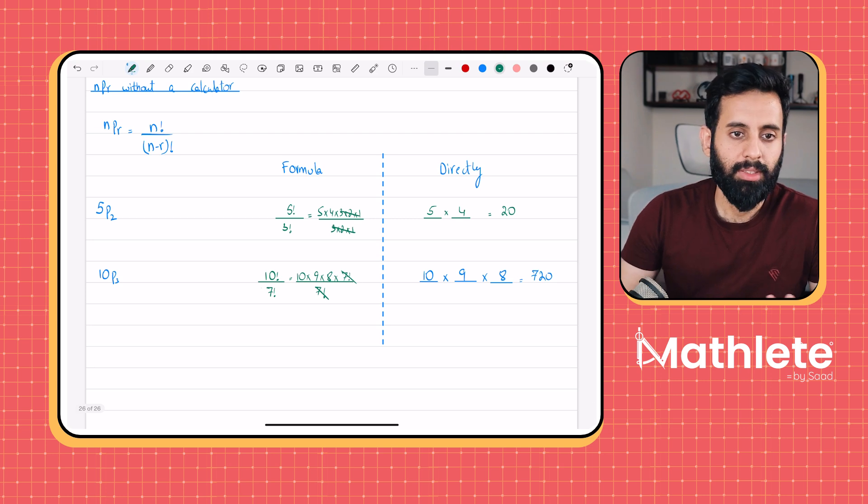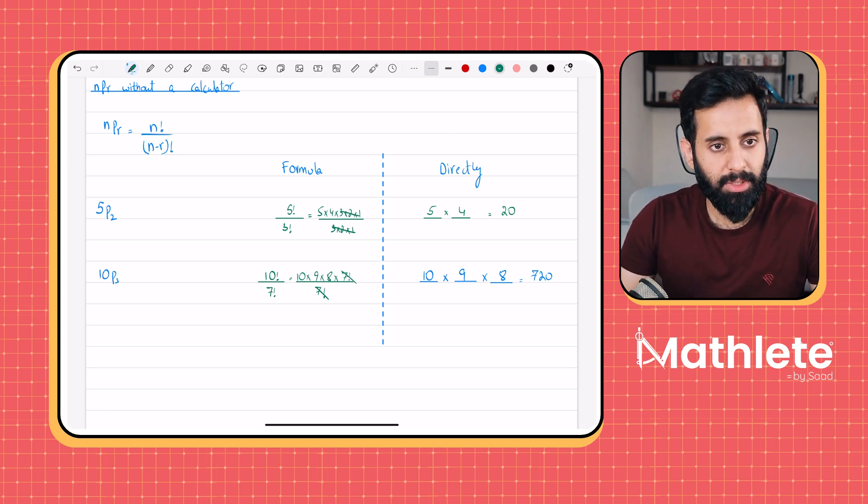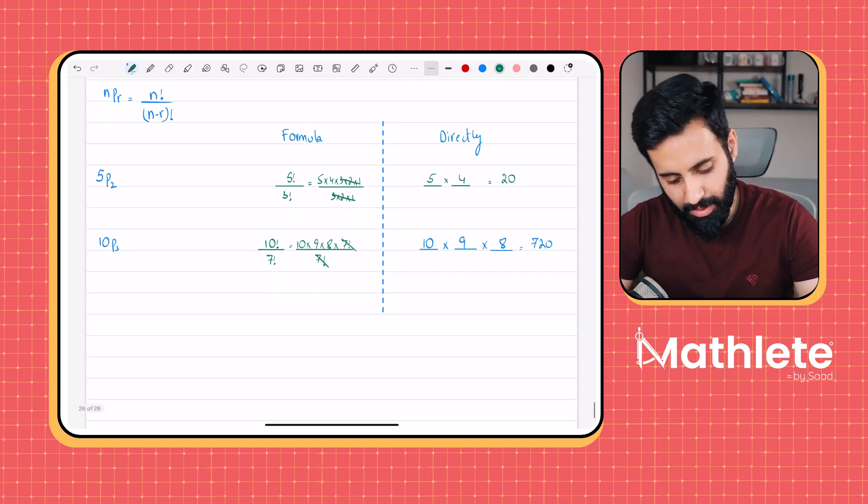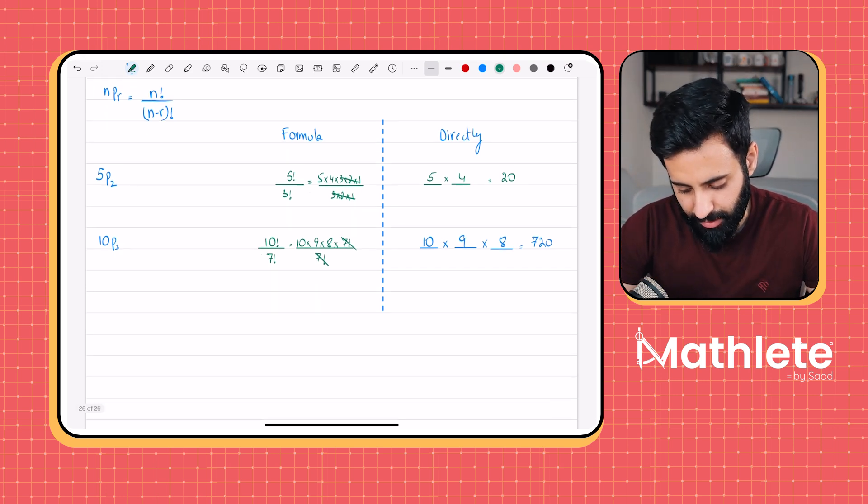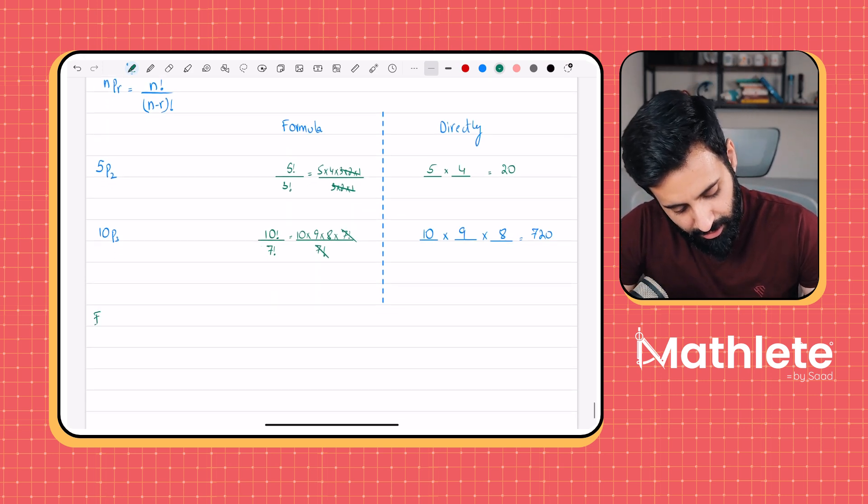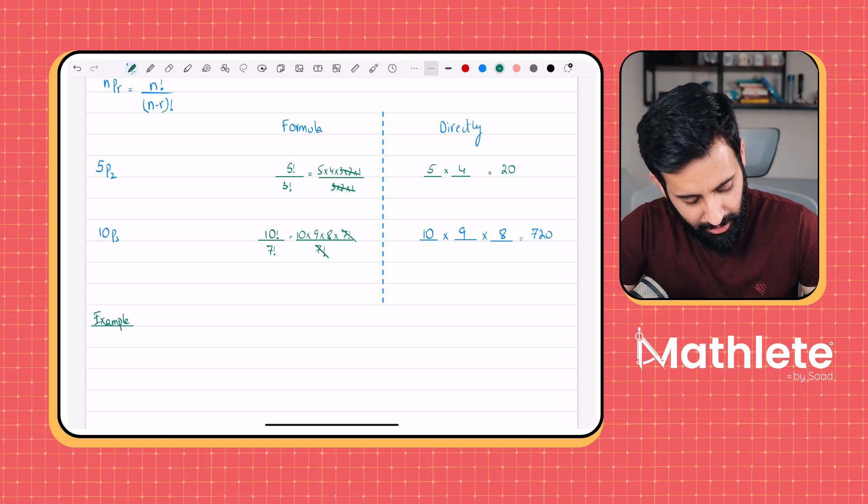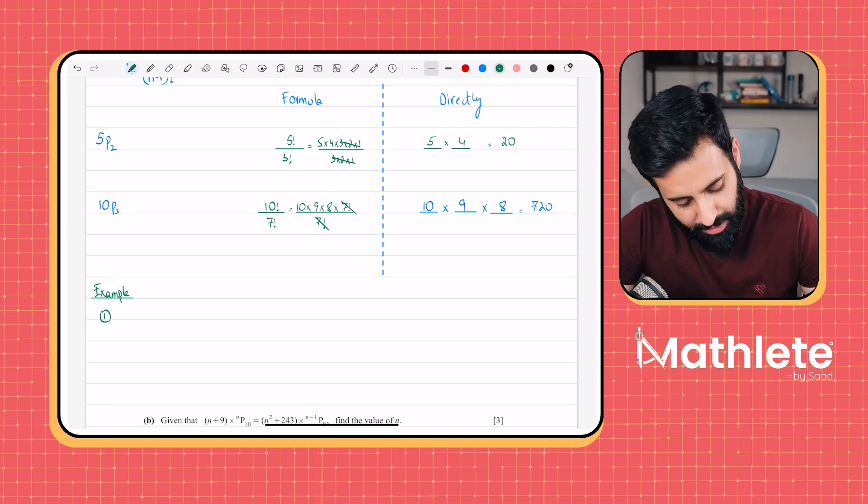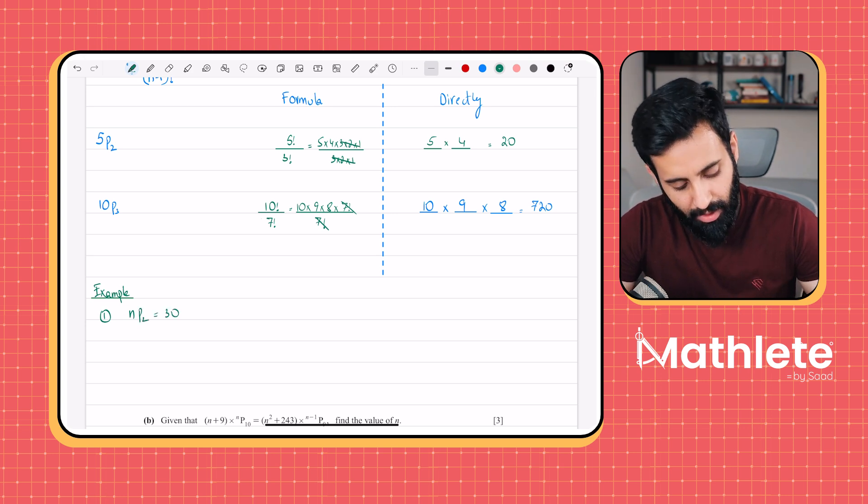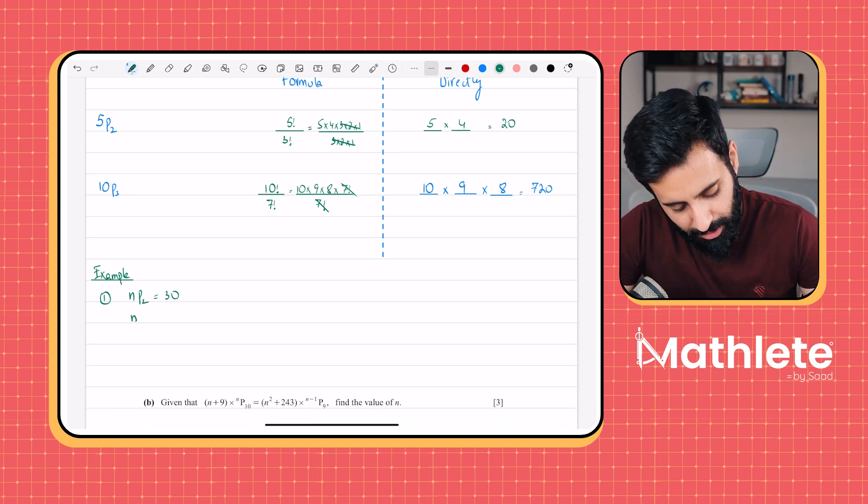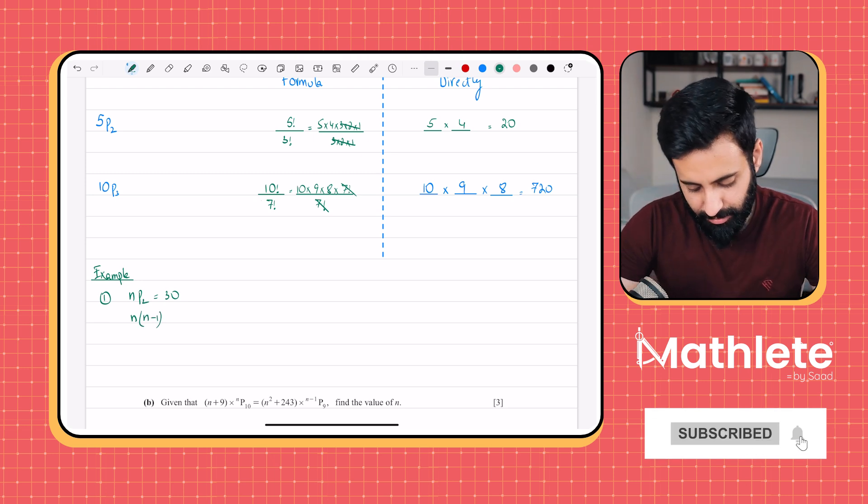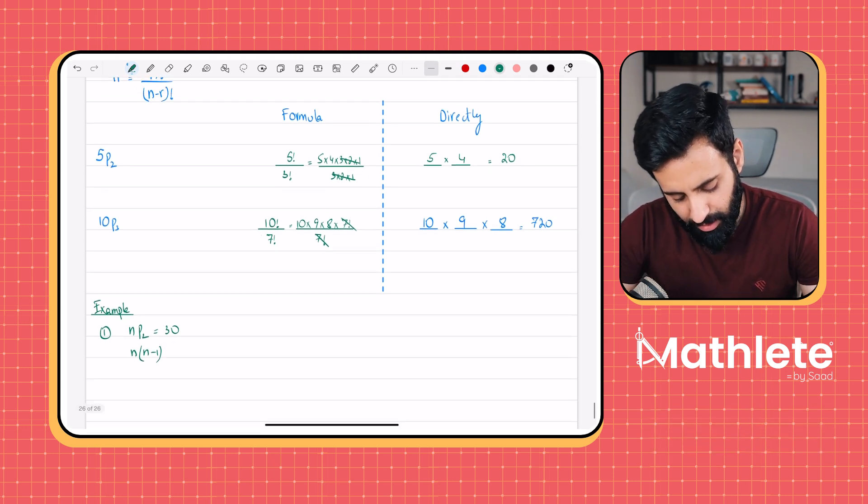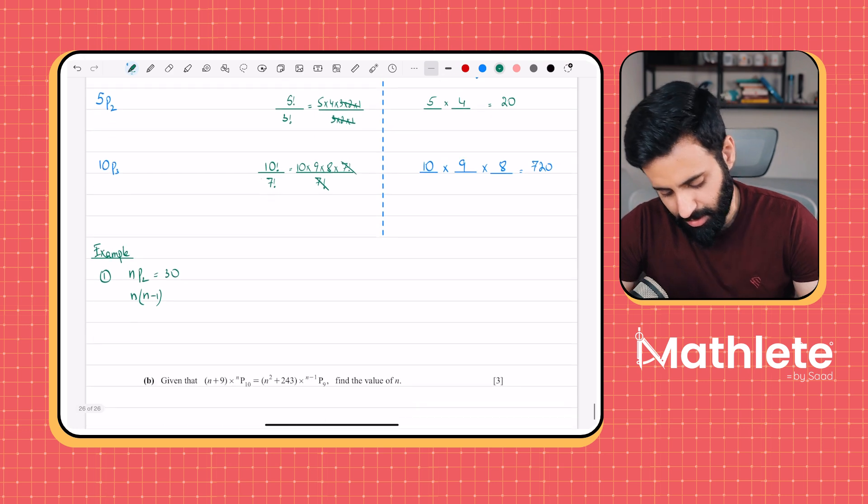So it really depends on the situation that you're in. If you're in a situation where the value is not a very large one, then you can do it without the formula. Now let's say you have NP2, which is equal to 30. Let's actually generalize the expansion as well.